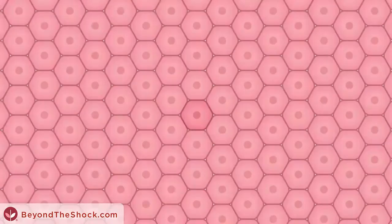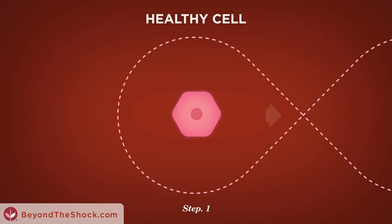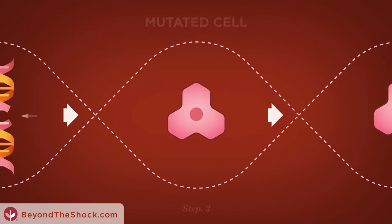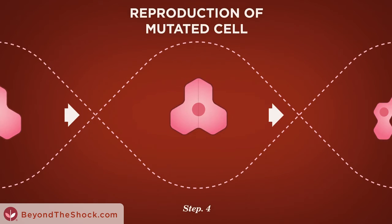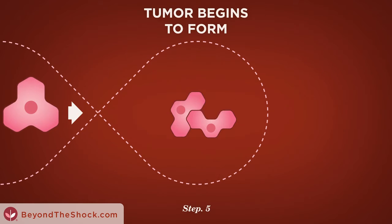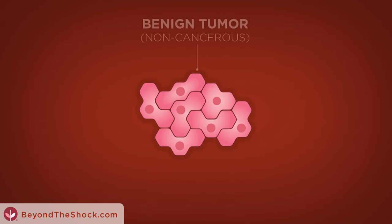Healthy cells are the basic building blocks of all tissue and organs in the body. But when cell DNA, the cell's wiring, is damaged, mutated cells begin to rapidly reproduce without following the pre-wired plan. Aggressive cell growth can form a tumor,